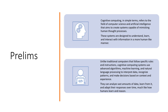The traditional computing systems follow specific rules and instructions, but cognitive systems differ. They use advanced algorithms, machine learning, deep learning, and natural language processing, and they can interpret data, recognize patterns, and make more informed decisions based on context and experience. They can analyze really large volumes of data, learn from it, and adapt their responses over a period of time — much like how humans learn and evolve. We are mimicking more of a human behavior.